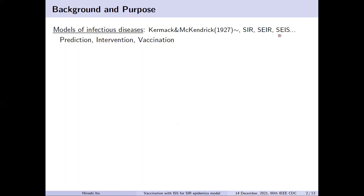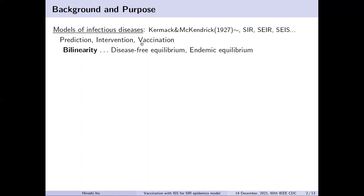This presentation uses the most basic SIR model. These models allow us to predict the spread of infectious diseases and think of ways to intervene, such as vaccination, regulation, and isolation. The key nonlinearity of this model is bilinearity, which brings in transcritical bifurcation, generating two distinct equilibria.